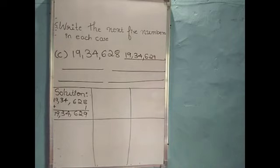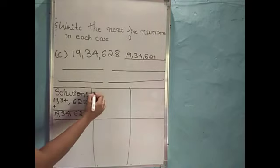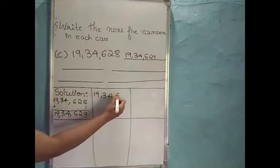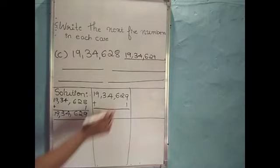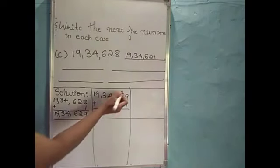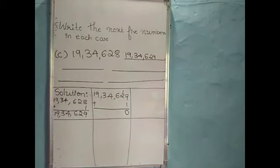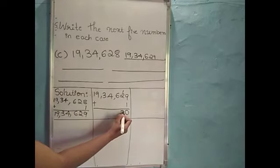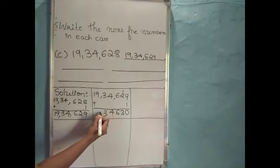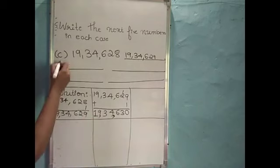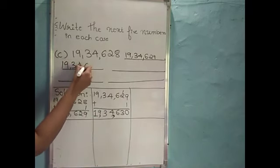Next we have to find out the next number. We should add 1 to this number. So I will write here 19,34,629. After that we should add 1: 9 plus 1 is 10 — carry 1, write 0 here. Then 1 plus 2 is 3. Write remaining numbers as it is: 6, 4, 3, 9 and 1. So the next number is 19,34,630.